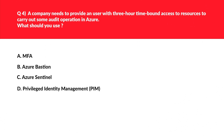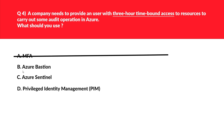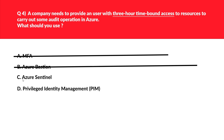This question is related to granting temporary or time-bound access. Let's look at option A, that is MFA. MFA adds an extra layer of security like text messages on your mobile phone — this question is about granting temporary access, not securing resources, so we'll reject this. Option B, Azure Bastion, provides secure and seamless RDP or SSH connectivity to virtual machines from the Azure portal over TLS — this will not help you get temporary access to resources, so option B is also incorrect.